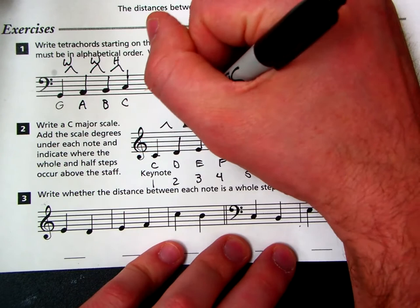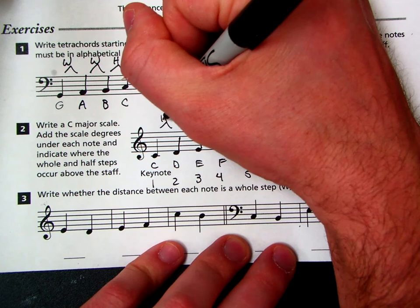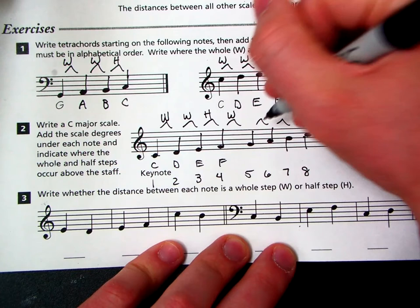And then it wants us to talk about where the steps occur. So we know there has to be a step between every note. So whole step, whole step, half step, whole, and then another tetrachord, whole, whole, half.